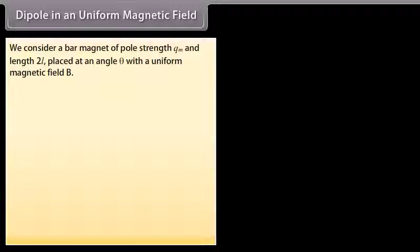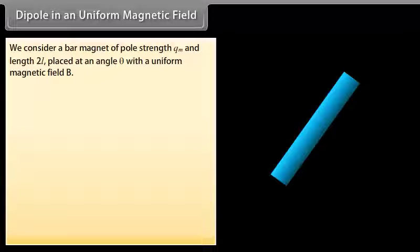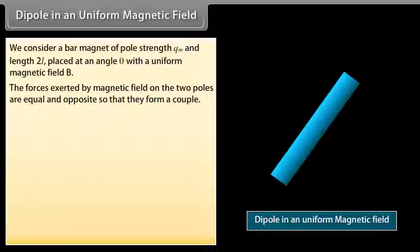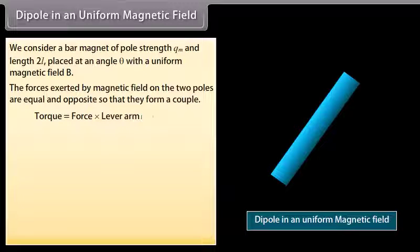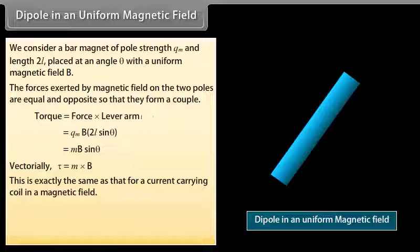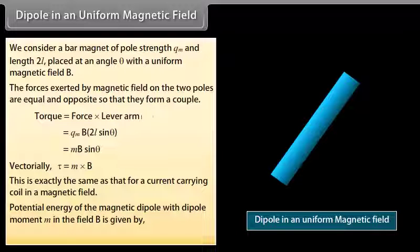Dipole in a uniform magnetic field: We consider a bar magnet of pole strength Qm and length 2L placed at angle theta with a uniform magnetic field B. The forces exerted by the magnetic field on the two poles are equal and opposite, forming a couple. Torque equals force times lever arm. By putting the values in the equation, we get torque equal to MB sin theta. Vectorially, it is represented as tau equals the cross product of M and B. This is exactly the same as that of a current-carrying coil in a magnetic field. The potential energy of the magnetic dipole with dipole moment M in field B is given by the negative dot product of M and B.